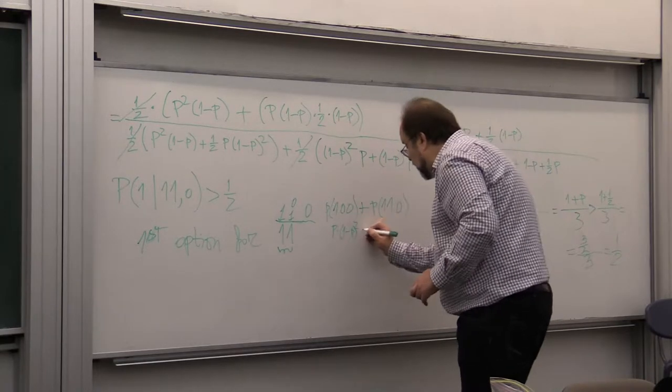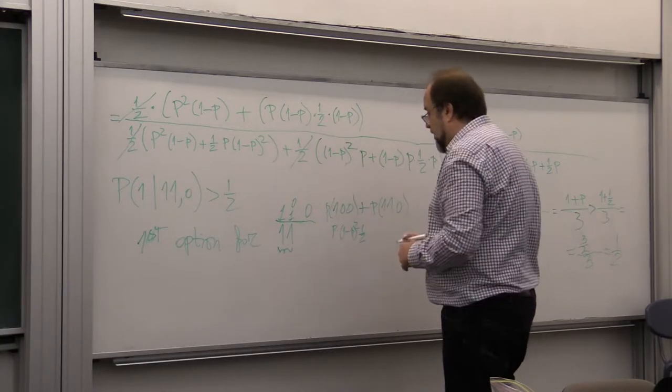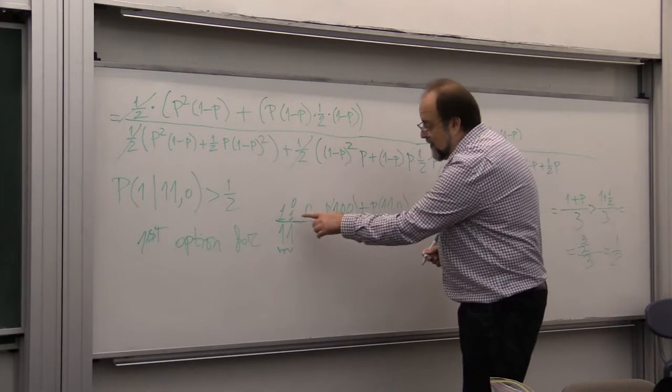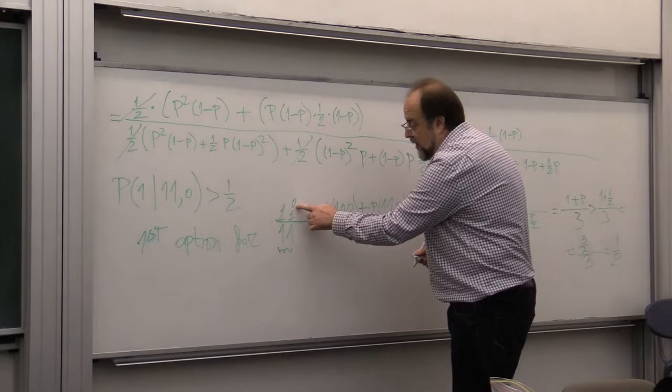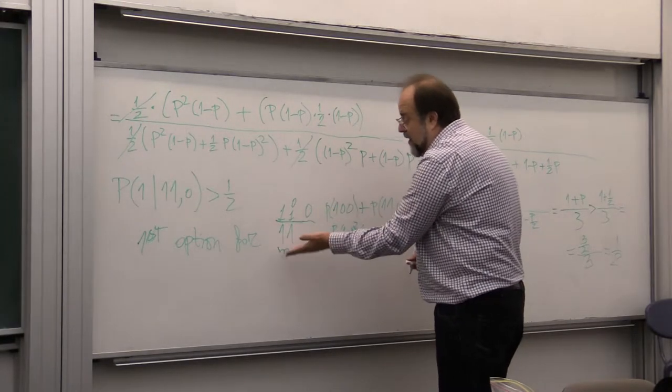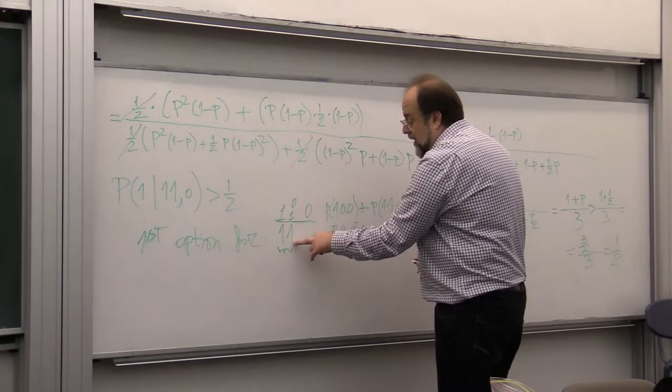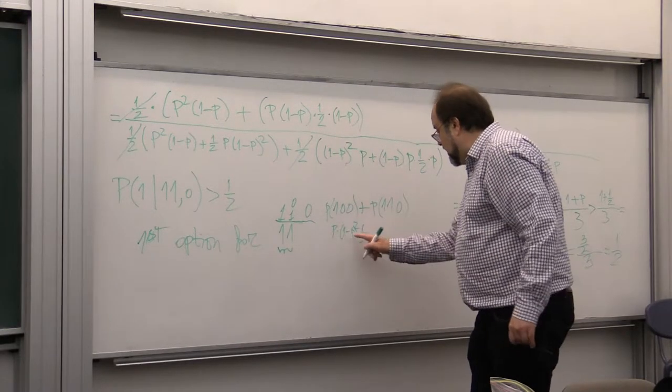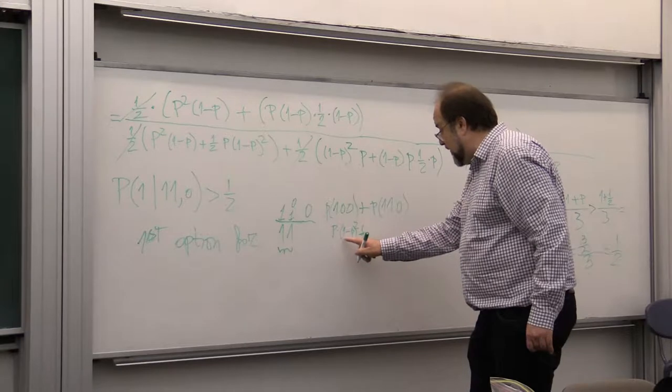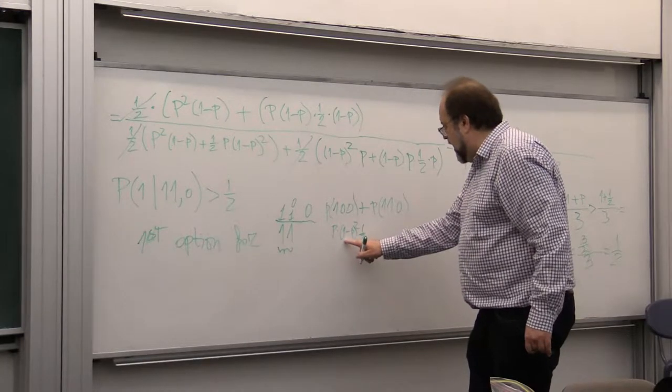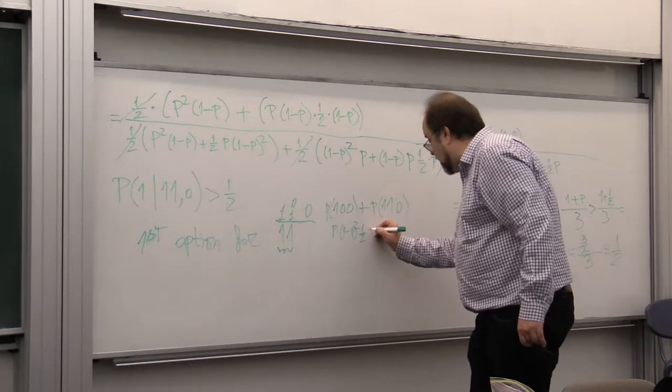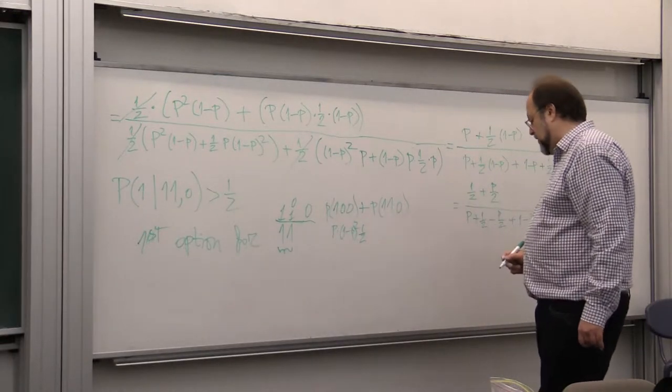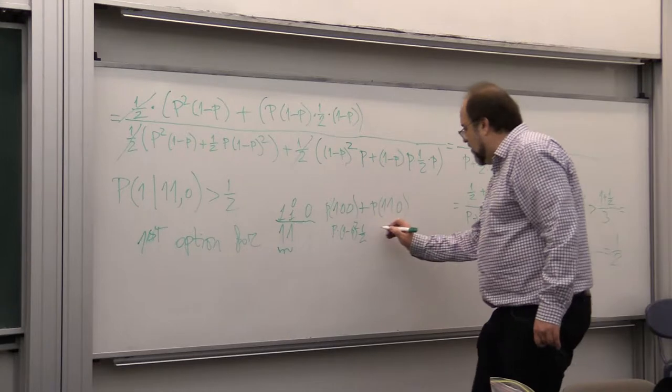But here we have to multiply by one half because he had to toss the coin, because he sees the second guy believes zero but sees one, so he tosses the coin and the coin tells him to write one.